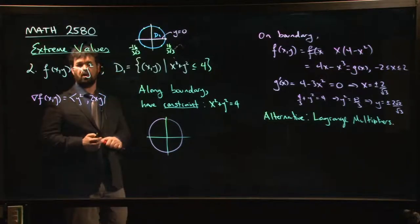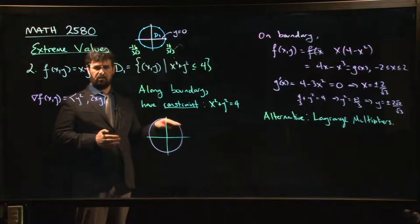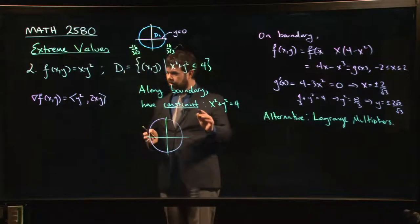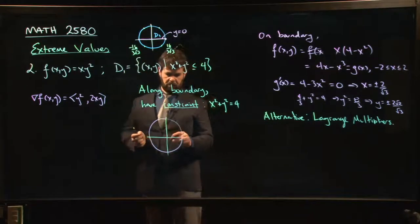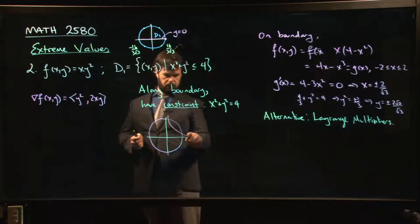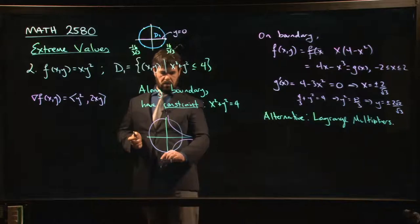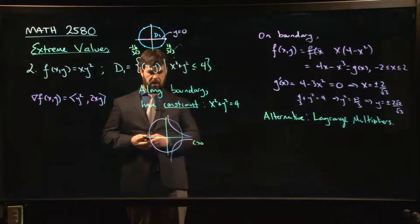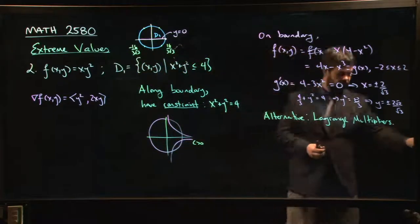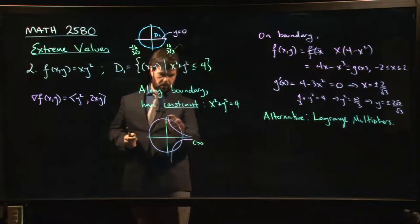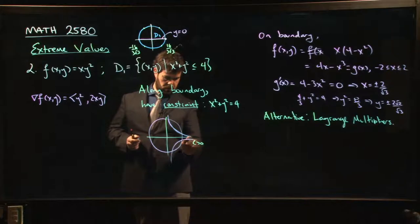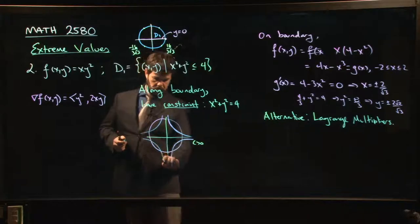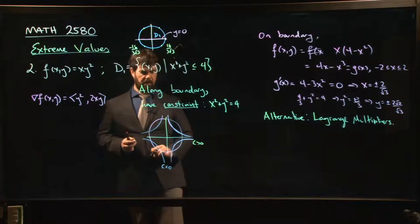Each value that we get for this function, if I said f equal to a constant, it gives me a level curve. Now, those level curves, what are they going to look like? Y squared is some constant over x. Or x is constant over y squared. I kind of know what those look like. They're going to look something like this. So that would be like a level curve if c is bigger than zero. And a level curve if c is less than zero might look something like that.